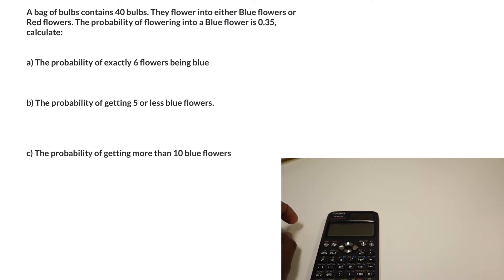Right, it is solution time. The first thing we need to realize is we need to model this using the binomial distribution. Let's say x represents picking or having a bulb that develops into a blue flower. We can say that can be binomially distributed, X ~ B(40, 0.35), where there are 40 bulbs and the probability of getting a blue flower is 0.35.